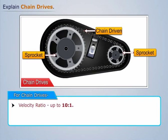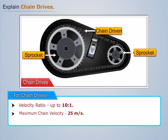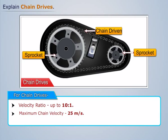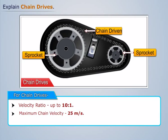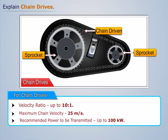They provide velocity ratios up to 10:1 with a maximum chain velocity of 25 meters per second. For chain drives, the recommended power to be transmitted is up to 100 kilowatts.